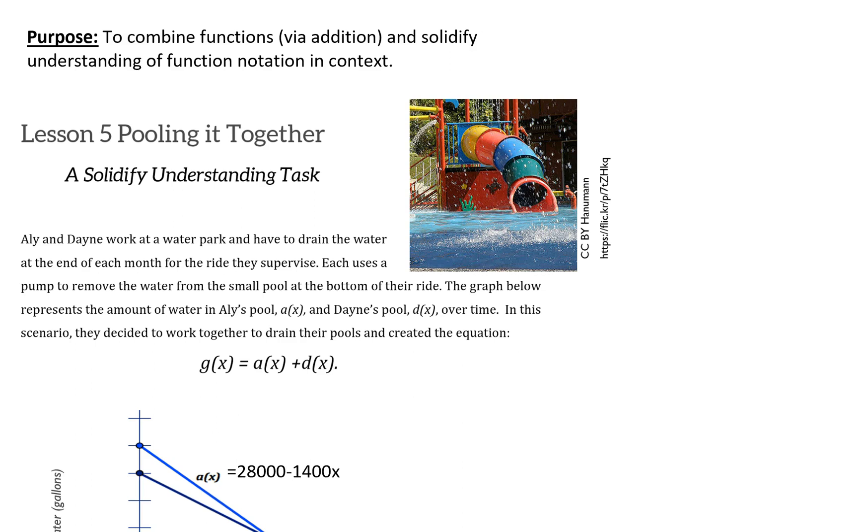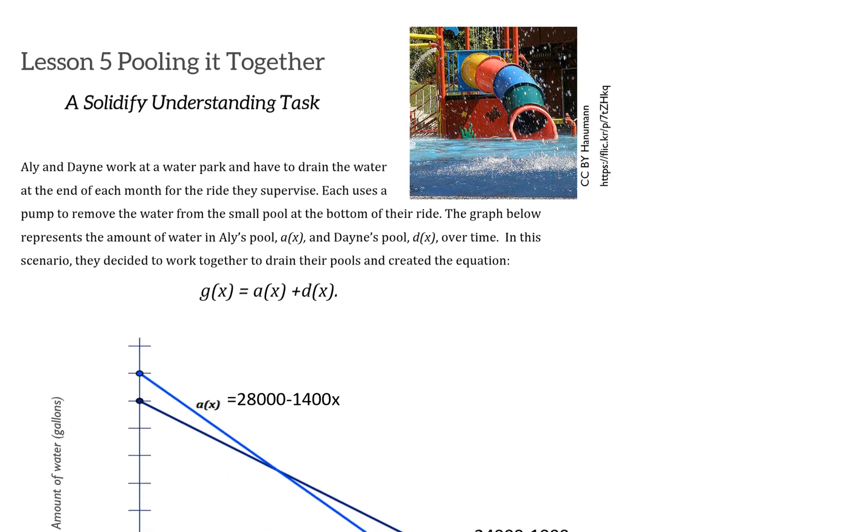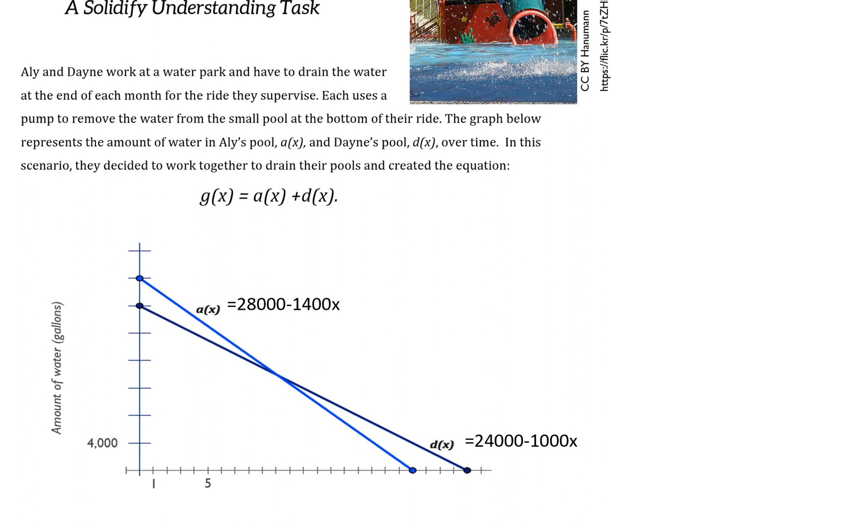Ally and Dane from the last task, who were draining their pools at the water park, have decided to team up and drain their pools together. We have the equations from the last task: A(x) = 28,000 - 1,400x and D(x) = 24,000 - 1,000x.